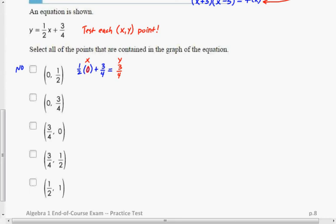But this next one is a yes. If I put 0 in for x, sure enough, I get 3 fourths for y. So the reason it didn't work in the last one is the reason it does work here. So this is a yes.